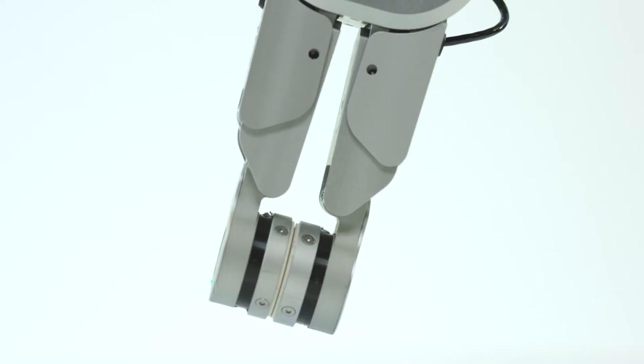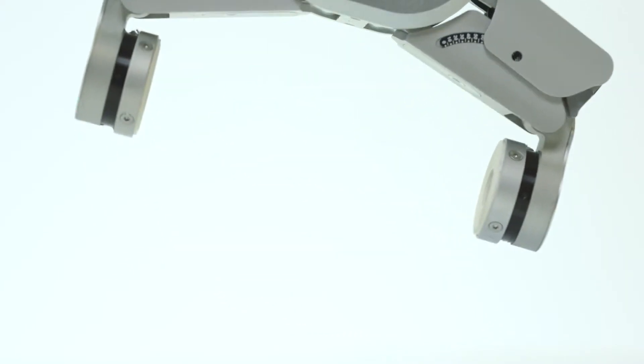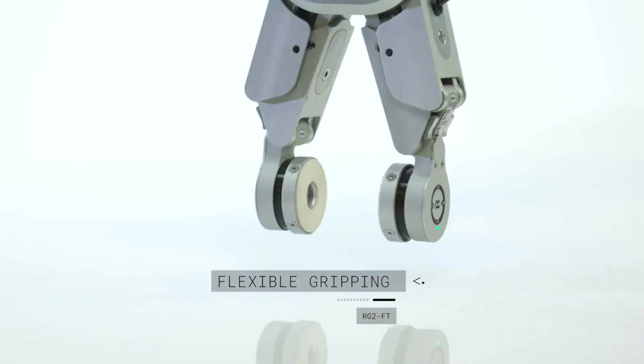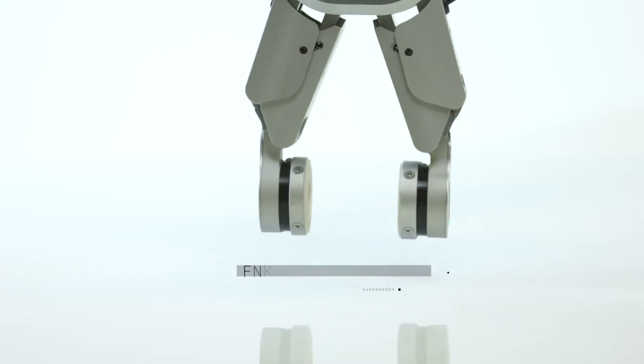The RG2FT can handle different size and shape objects simply by using customized fingertips and thus enabling flexible gripping.